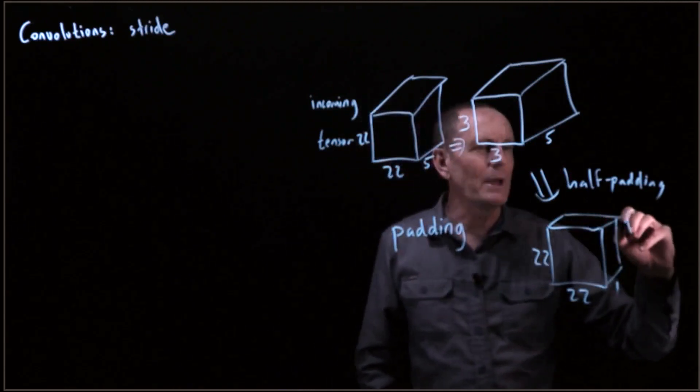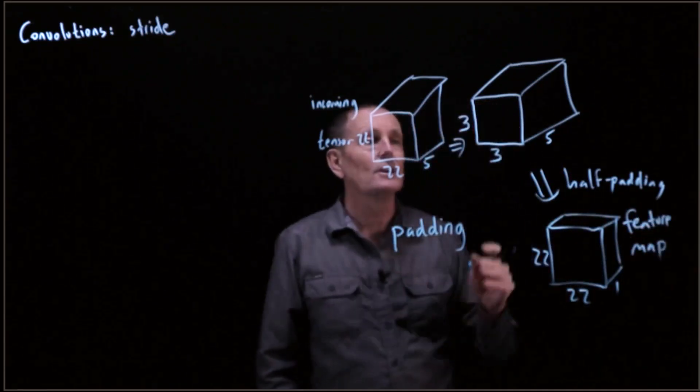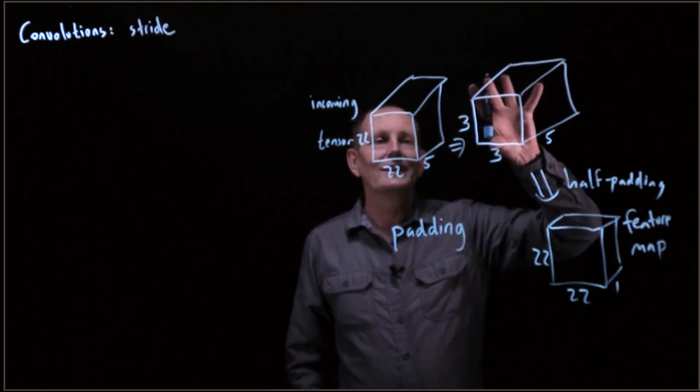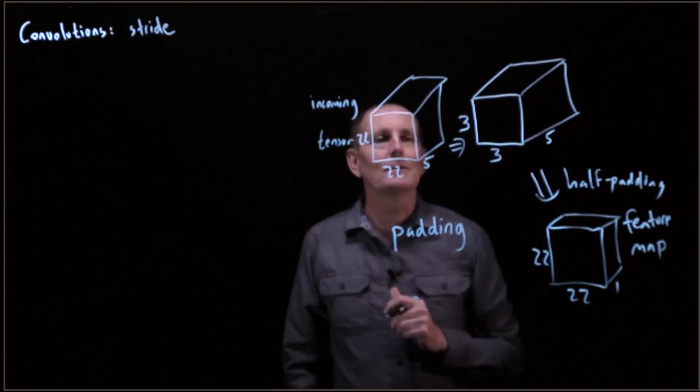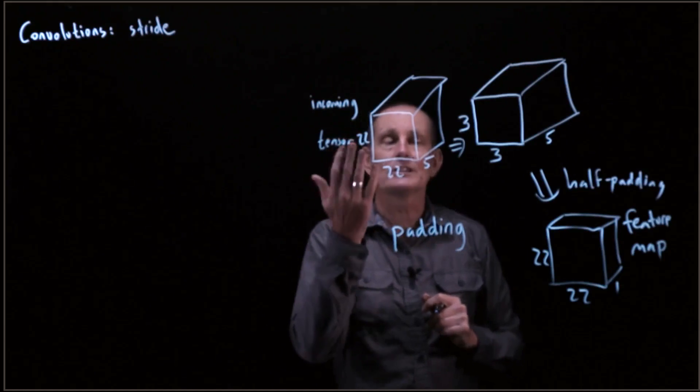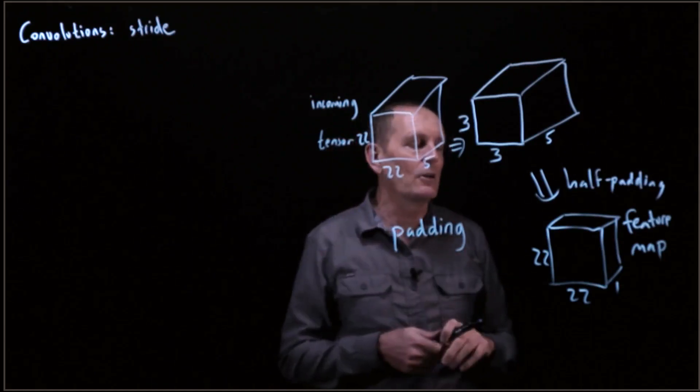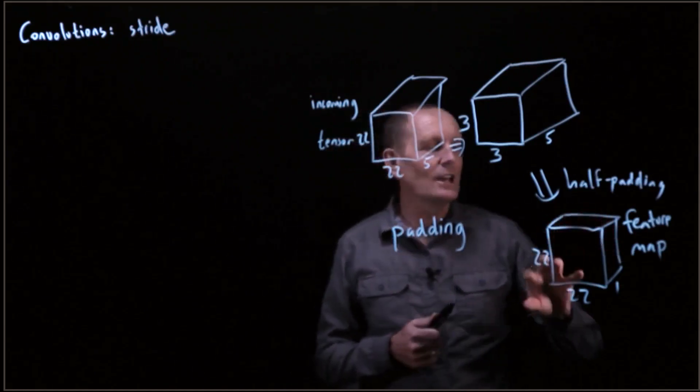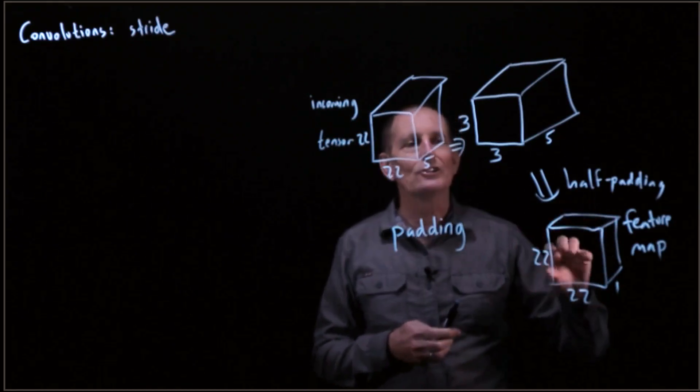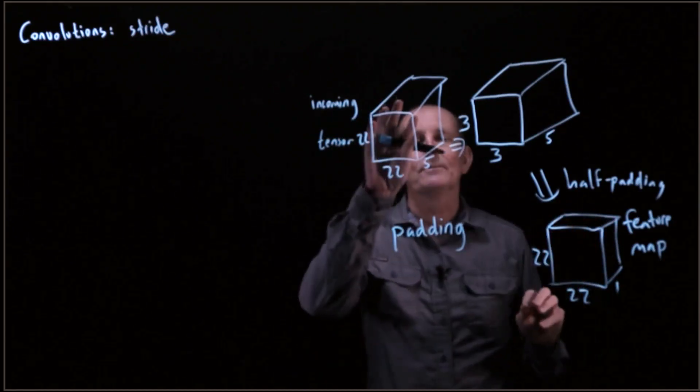This, by the way, is called a feature map sometimes. The kernel is pulling out some sort of feature from its incoming data, whether that's an image at the first level or later on in levels. This provides a spatial representation of the features in here.